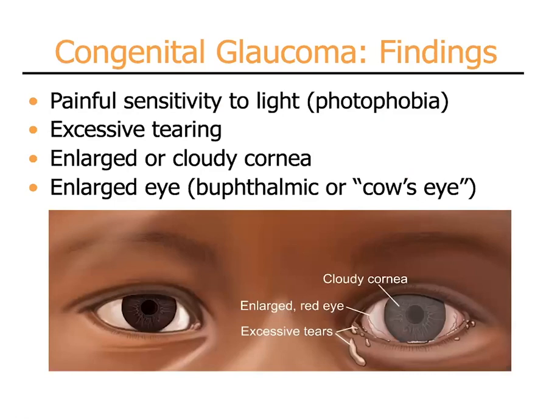Children with congenital glaucoma will show signs of light sensitivity or photophobia. They may have excessive tearing and the cornea may be cloudy or even enlarged. The normal cornea is approximately 12 millimeters in diameter from side to side. In cases of congenital glaucoma, the cornea may be larger and may look like a cow's eye — what we call buphthalmos. In these patients, the cornea may be 13 or 14 millimeters in diameter.